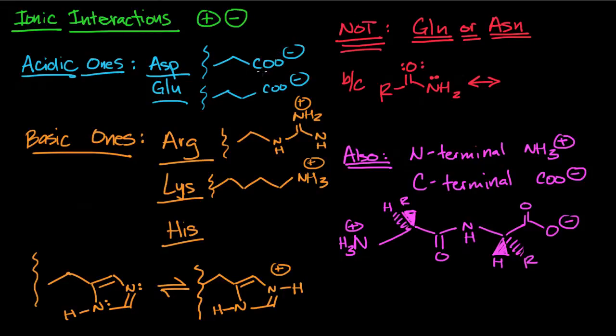For example aspartate and glutamate, the COH residue, that COH functional group is going to be deprotonated at physiological pH. Arginine has the guanidinium ion, lysine has the primary amine. Both of those have pretty high pKa's so they're going to stay protonated and they will have a positive charge at physiological pH.